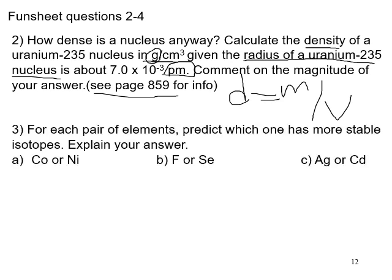Fun sheet question 3 gives you pairs of elements and asks which has more stable isotopes. Recall that stability depends on the number of protons and the number of neutrons — whether they're odd or even, and how they relate to the magic numbers. This is similar to textbook problem 19.17, which asks you to predict which of each pair has more stable isotopes.